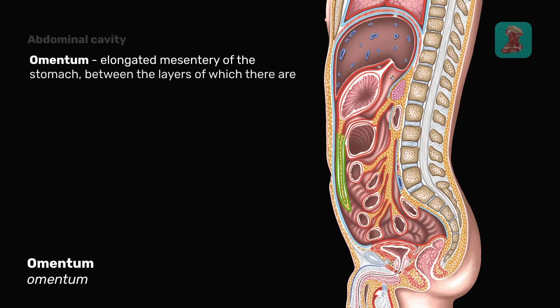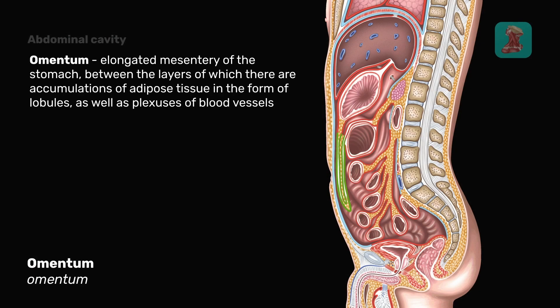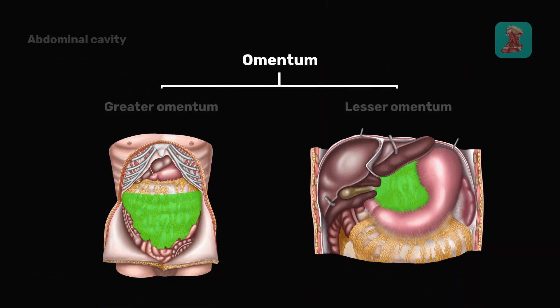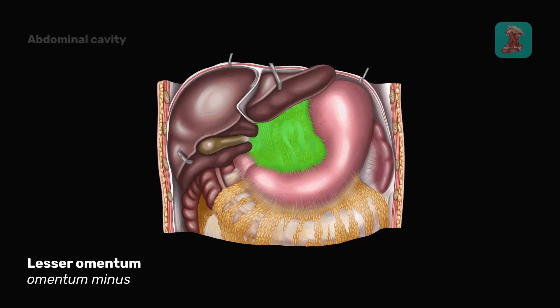The omentum is the elongated mesentery of the stomach, between the sheaths of which there are accumulations of adipose tissue in the form of lobules, as well as plexuses of blood vessels. There are two omenta in the human body: the greater omentum and the lesser omentum.